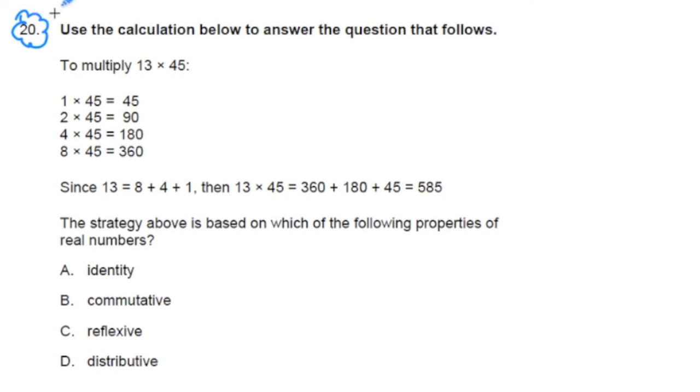Number 20 says, use the calculation below to answer the question that follows. It gives us this helpful information. It says that 1 times 45 equals 45, 2 times 45 equals 90, 4 times 45 equals 180, 8 times 45 equals 360. Since 13 equals 8 plus 4 plus 1, then 13 times 45 equals 360 plus 180 plus 45, which all adds up to 585.